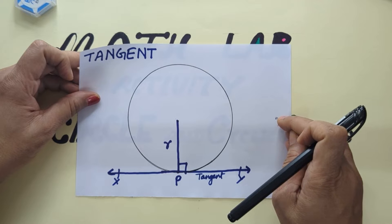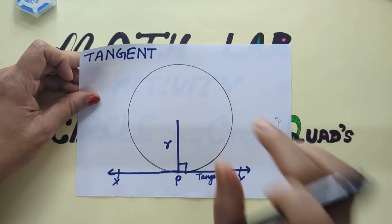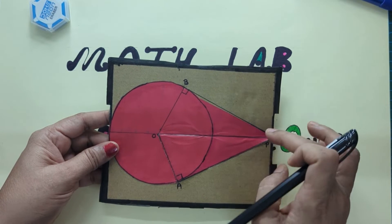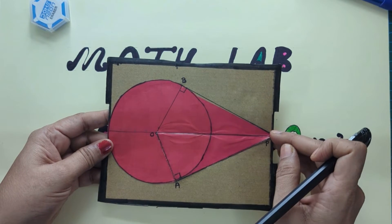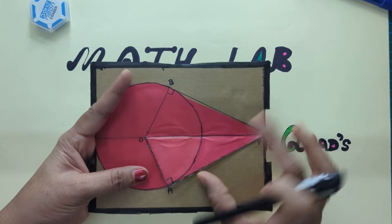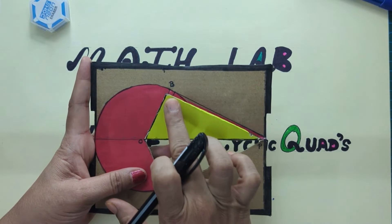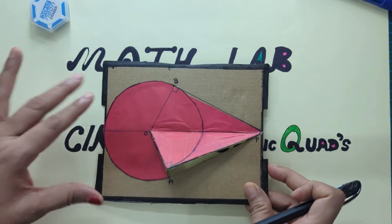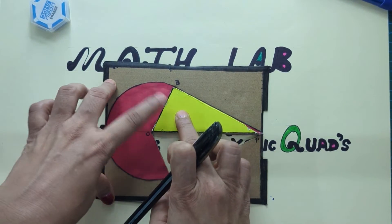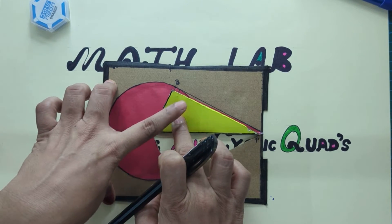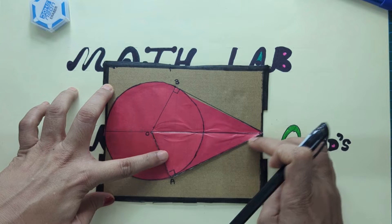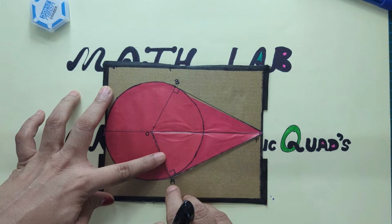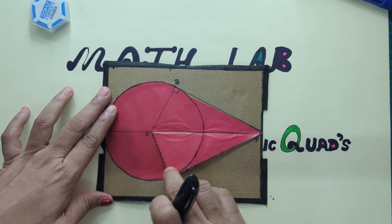Now, the properties of tangents drawn from an external point to a circle. This is the template through which we will learn all the properties of tangents drawn to the circle from an external point. As I fold this triangle, this triangle perfectly superimposes on the other triangle on the other side. This triangle is a right triangle because this is the tangent and this is the radius — radius and tangent at the point of contact, which is point A, are perpendicular and stand at right angles.